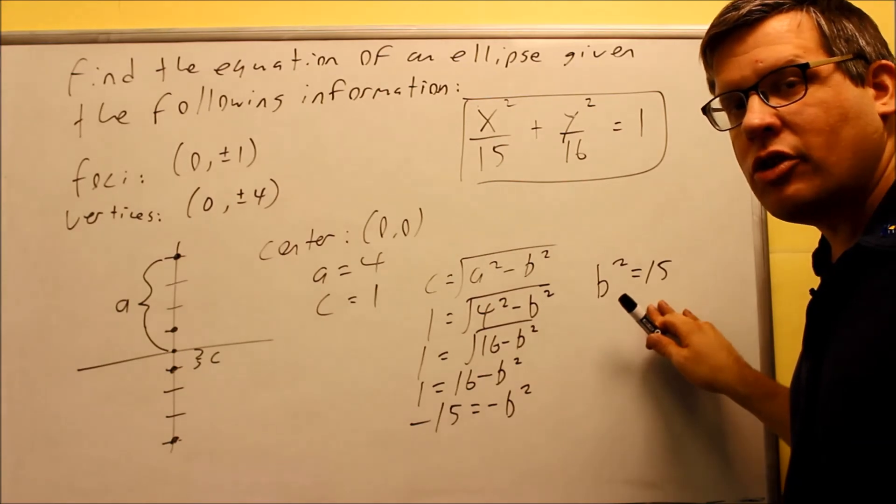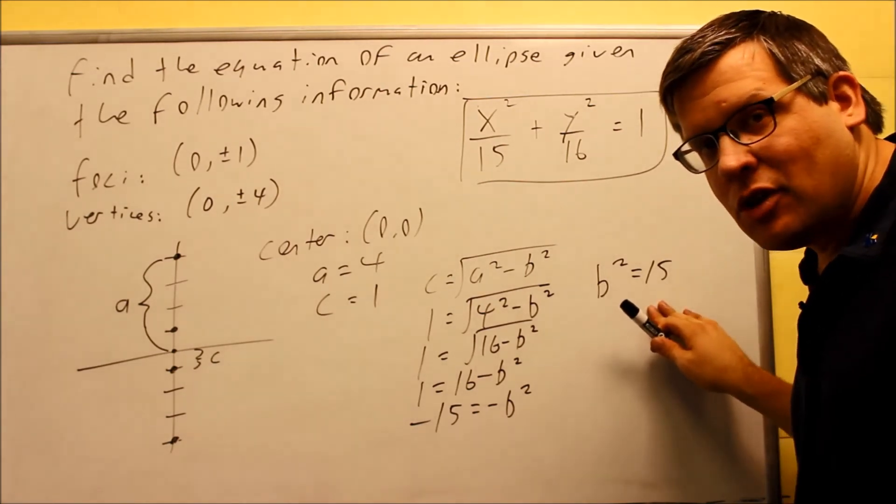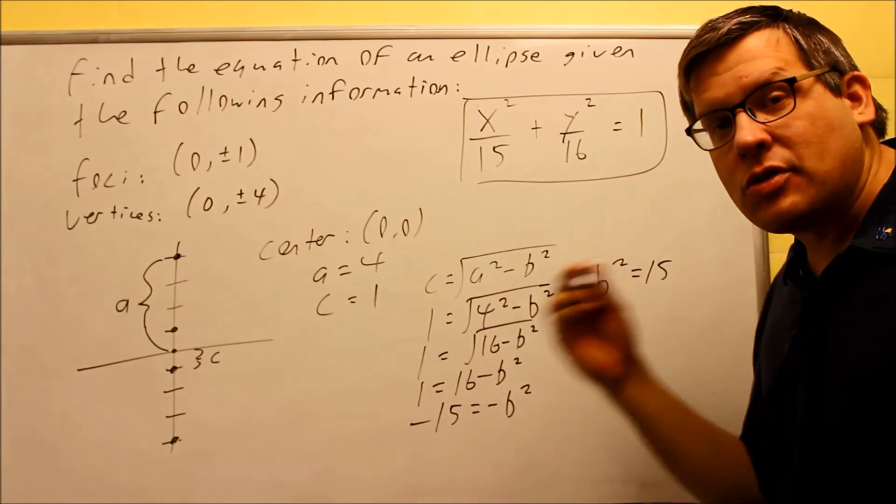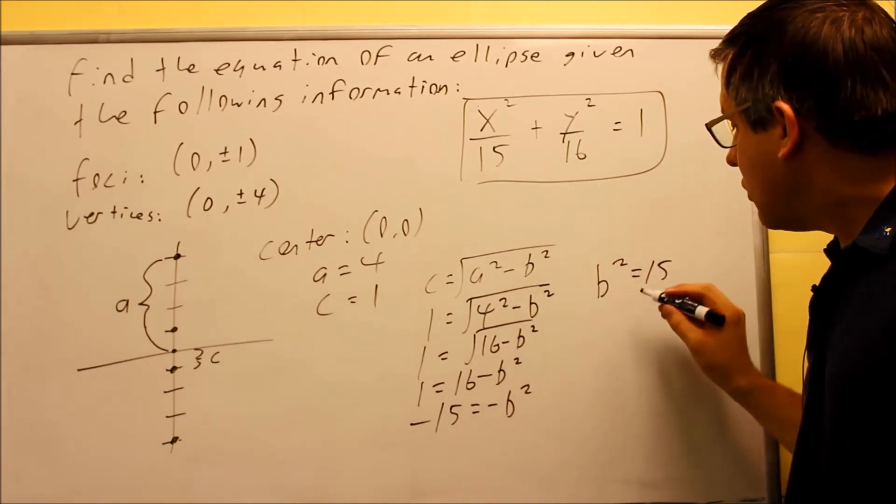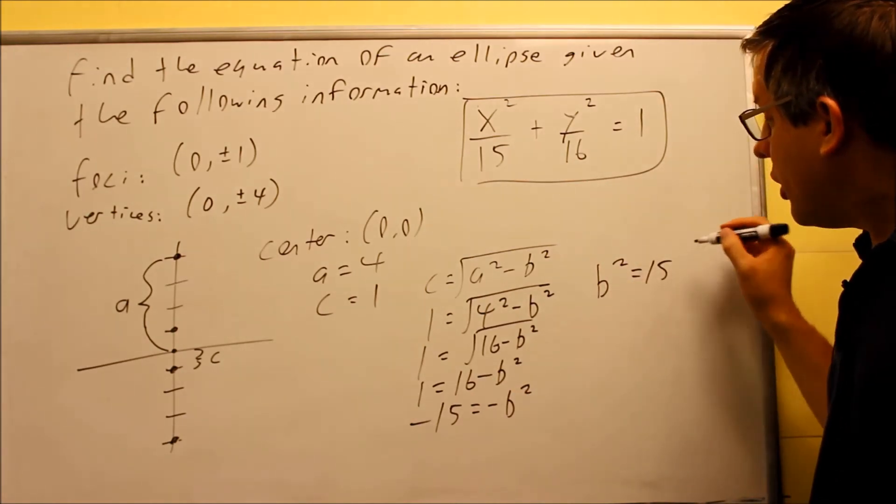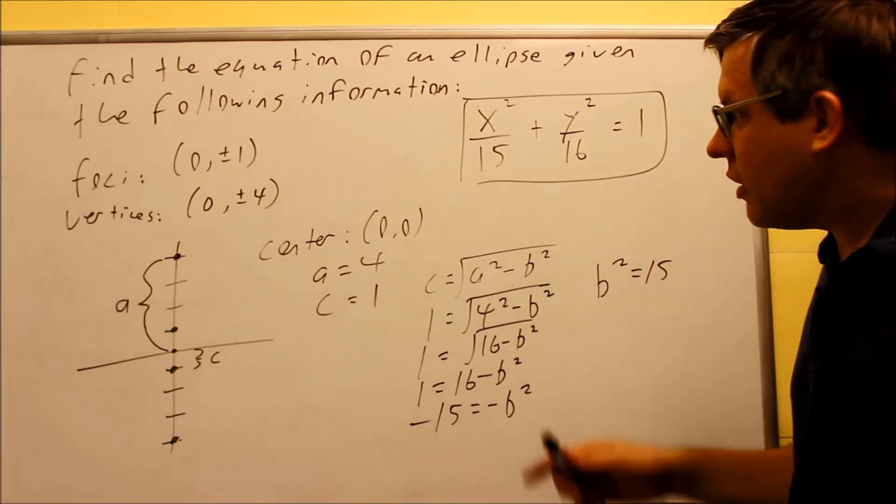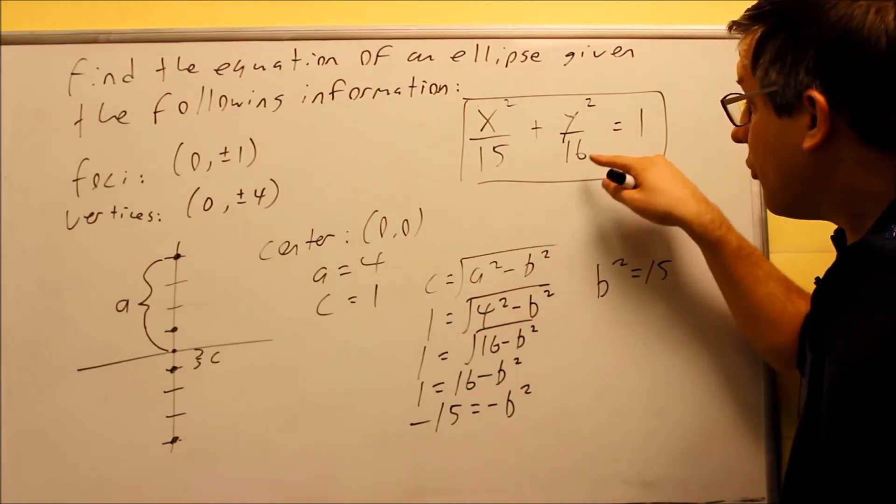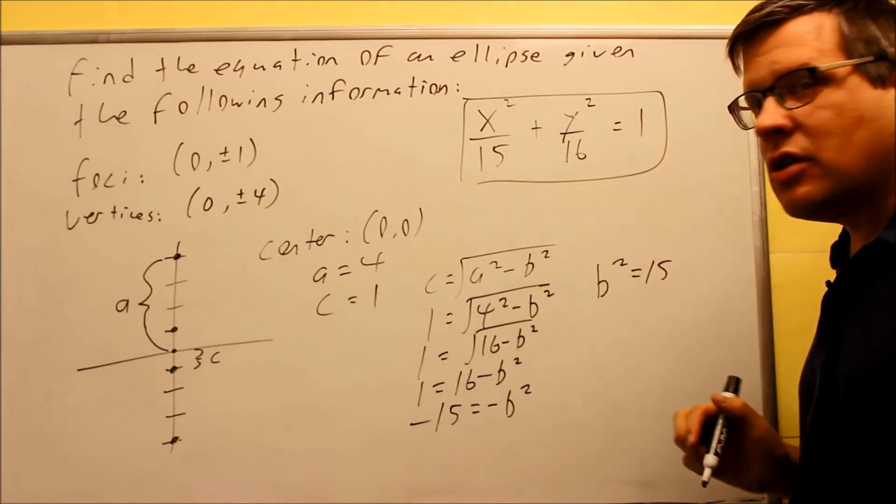what I should mention here is you don't need to actually solve for b itself because the formula only requires you to have b squared. So that's why I just solved for b squared only and I got 15, put that in there and then you know a squared is going to be 4 squared or 16 there. So that's the answer to the problem.